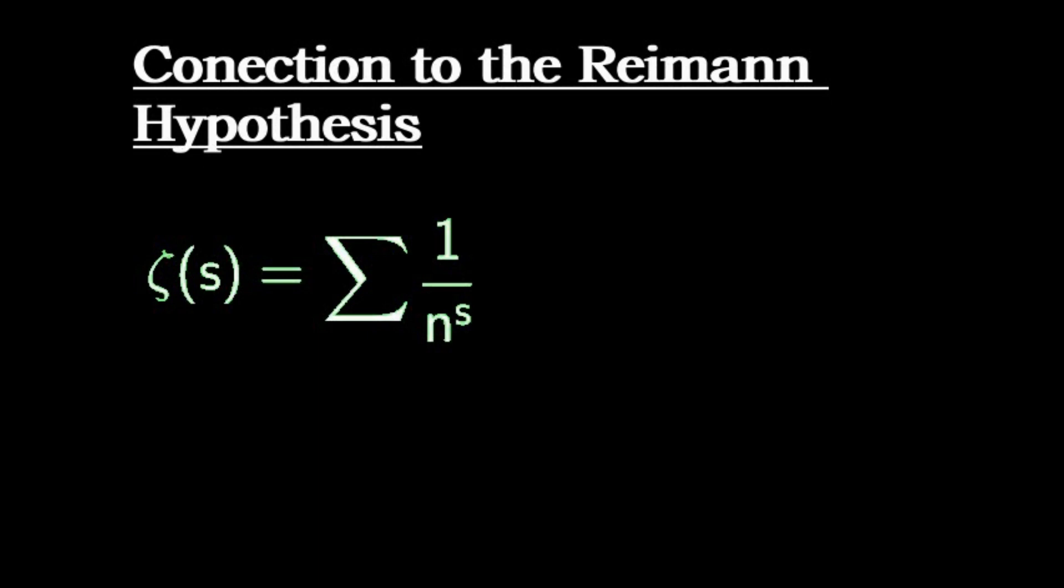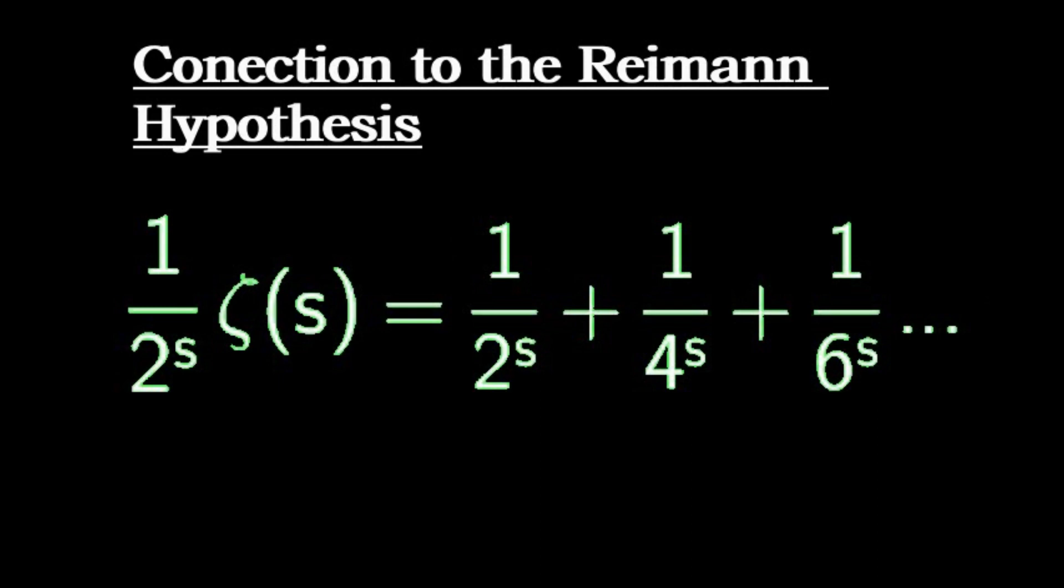At first, this seems like a simple sum with no relation at all to the prime numbers. But then Euler shows us something remarkable. Consider multiplying the zeta function by 1 over 2 to the s. Now instead of the sum of all numbers, we get the sum over all multiples of 2.